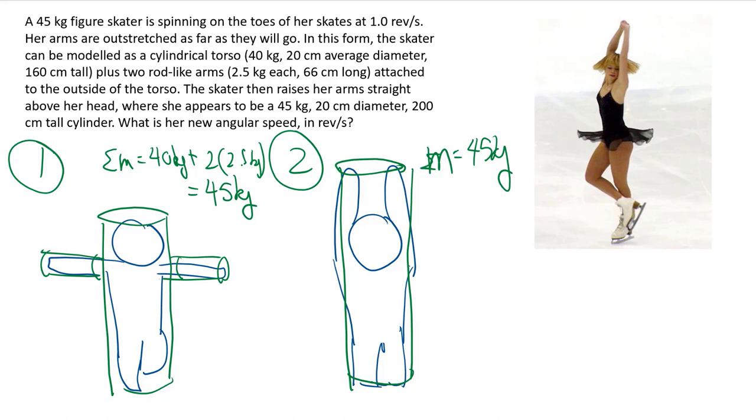But the spin rate does change, because now the mass are distributed differently. With the arms out, there's a whole bunch of mass out here, that's far away from the axis rotation, whereas afterwards, that is not the case.